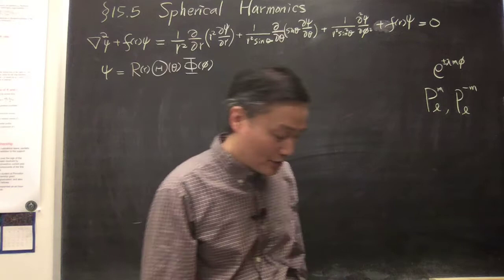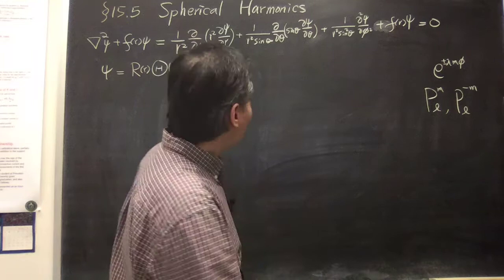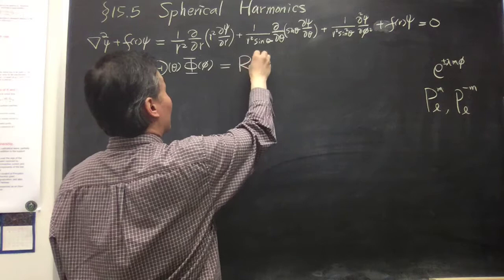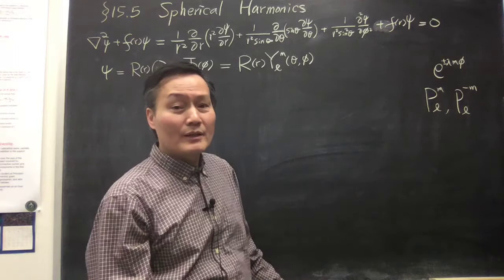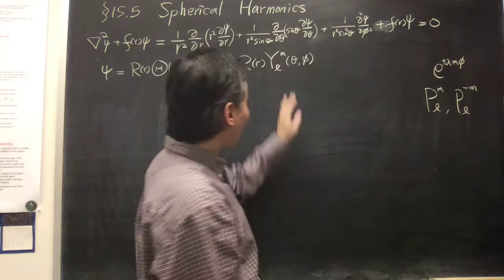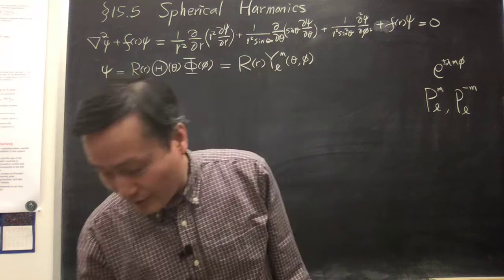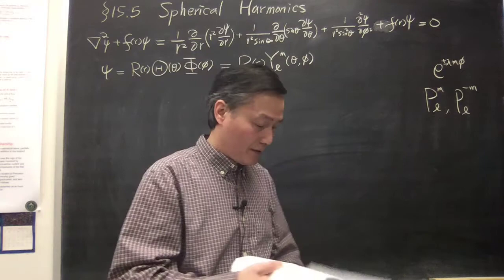In defining the spherical harmonics, we require a certain normalization constant that simplifies the normalization compared to the associated Legendre function. We combine the two and write the solution as R(r) times Y_Lm(θ,φ) in the notation of the textbook. Substituting back, we get two equations: one for R and one for Y_Lm — equations 11.140 and 11.141 in your textbook.